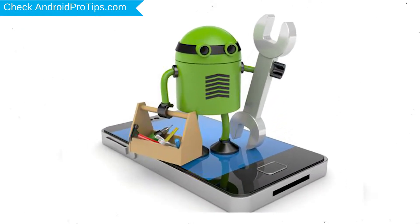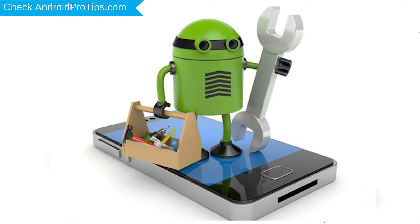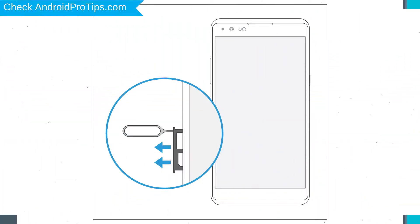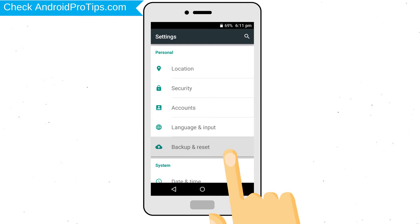Before resetting your mobile, your battery must be above 50%. Remove SD cards and SIMs. Back up your Android mobile data if possible.